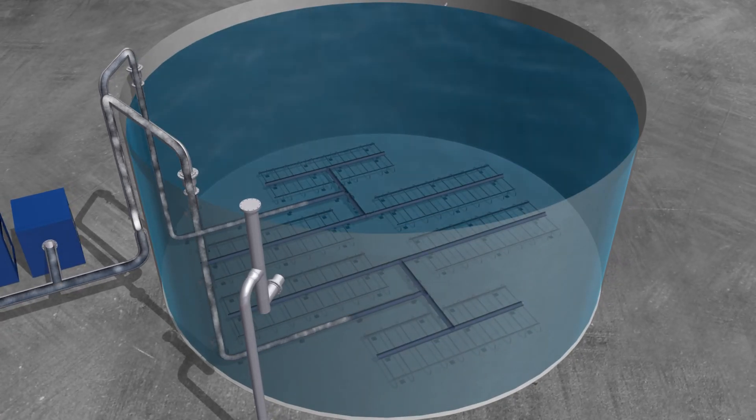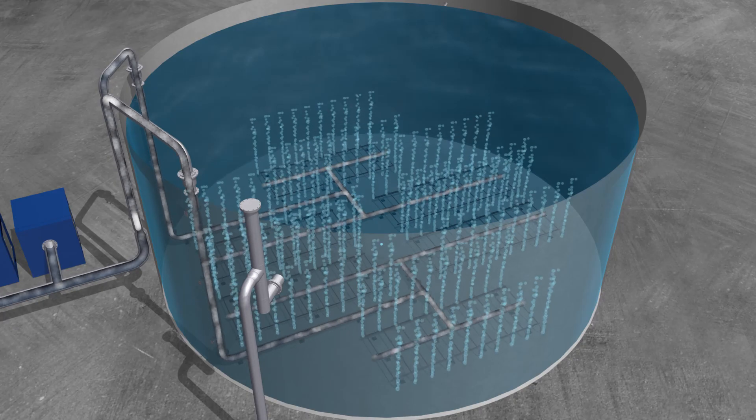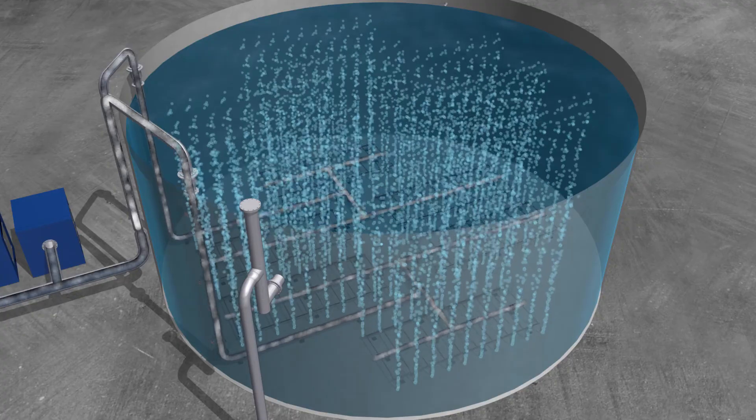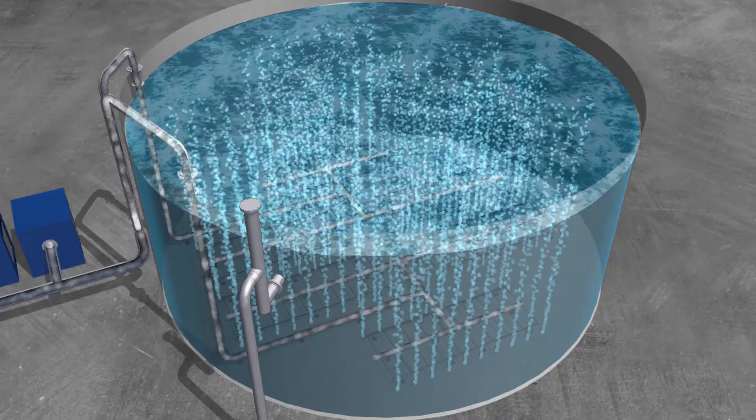The aeration manifolds are strategically placed inside the tank to have even coverage throughout the entire volume of the reactor, and to provide the necessary mixing for maximum treatment during the reactor's retention time.